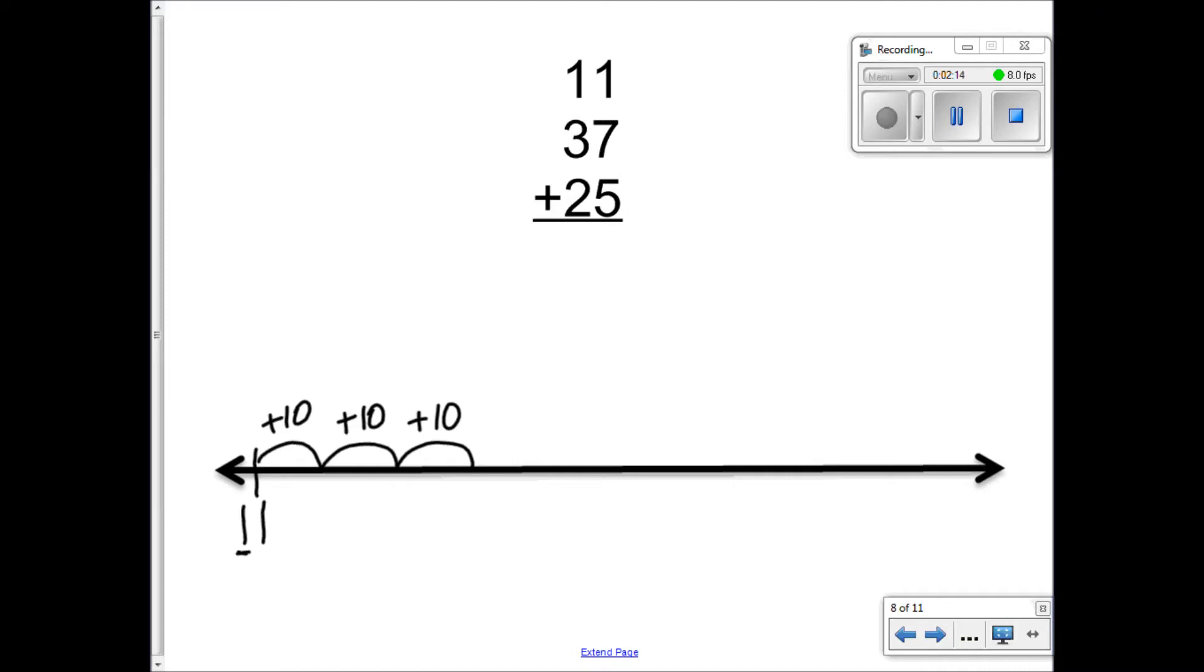The number 11 has one ten, so my next number is going to have two tens. Two tens, one one is the number? Twenty-one. And I add ten more, and it is? Thirty-one. I add ten more, and it is? Forty-one. Absolutely. You notice the only number that changed is the one in the tens place.